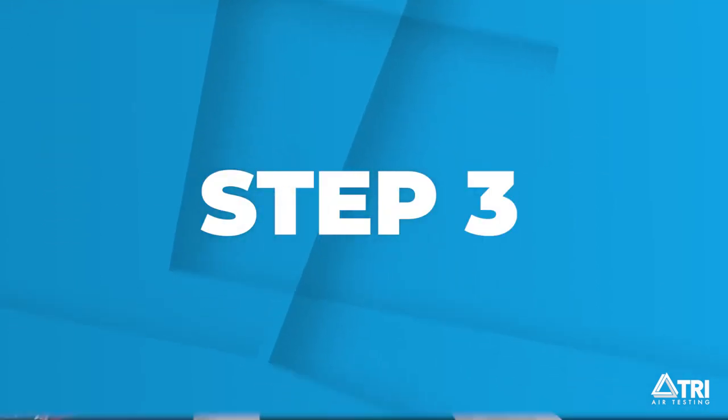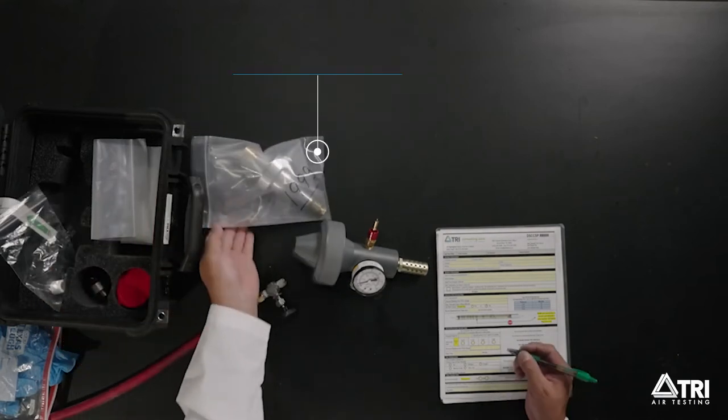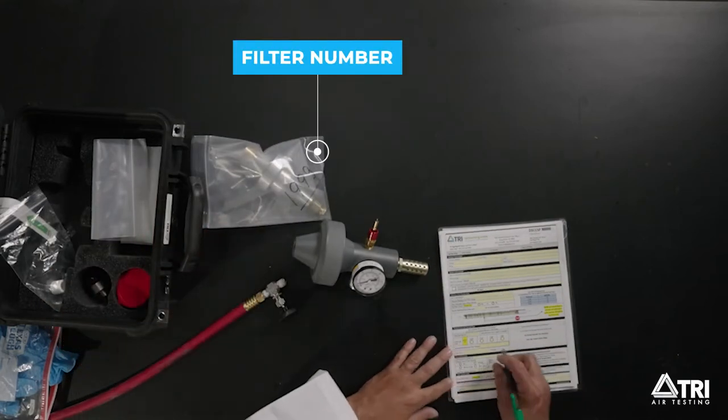Step 3. Find the filter number which is here and record that on the data sheet under mold and bacteria sample data.